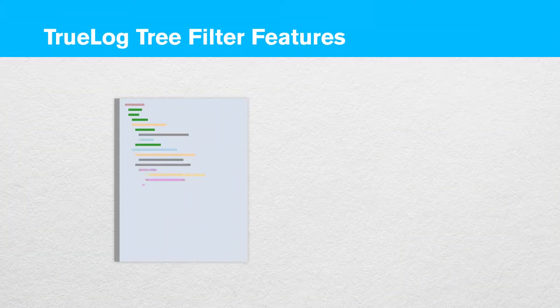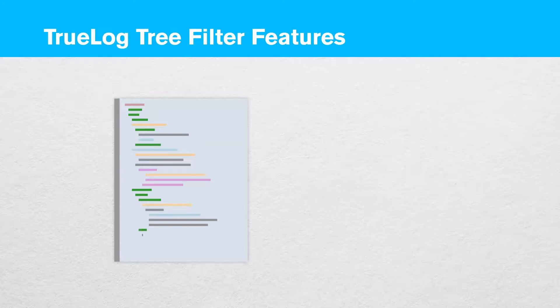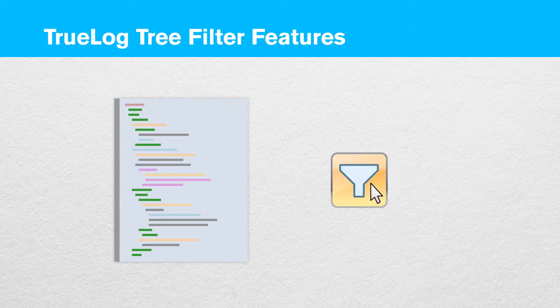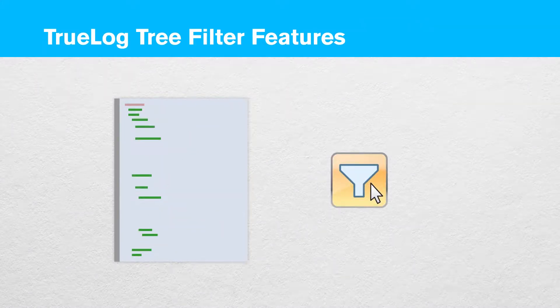Let's take a look at the filter features. Some load tests can produce complex TrueLocks with deep hierarchies. The TrueLock Tree Filter allows you to hide specific nodes to make a tree short and clear.